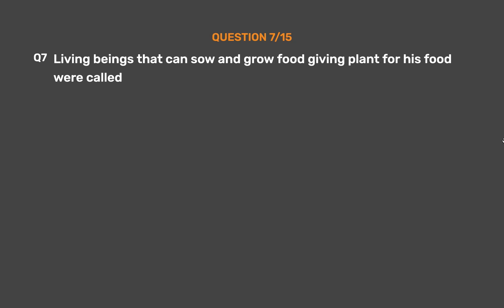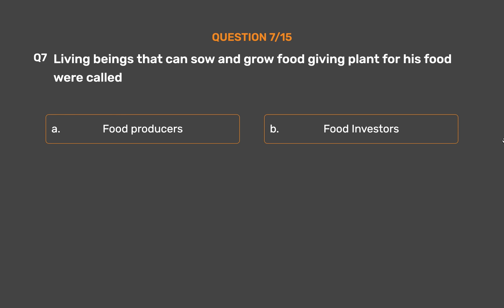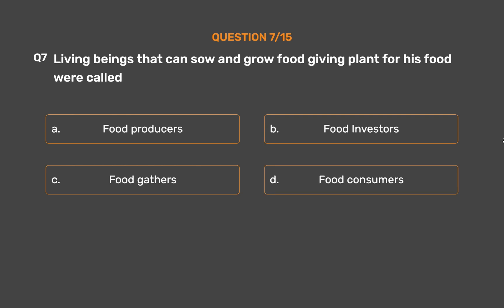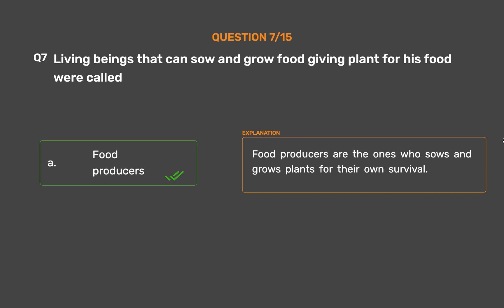Question number seven. Living beings that can sow and grow food-giving plants for their food were called: Option A - Food producers, Option B - Food investors, Option C - Food gatherers, Option D - Food consumers. The correct answer is Option A: Food producers. Food producers are the ones who sow and grow plants for their own survival.